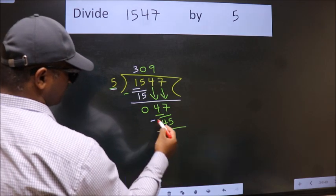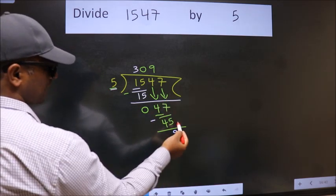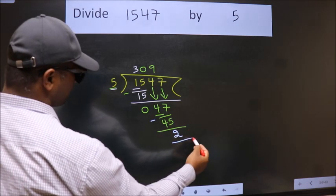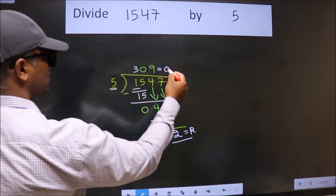Now, we subtract. We get 2. No more numbers to bring it down, so we stop here. This is our remainder. This is our quotient.